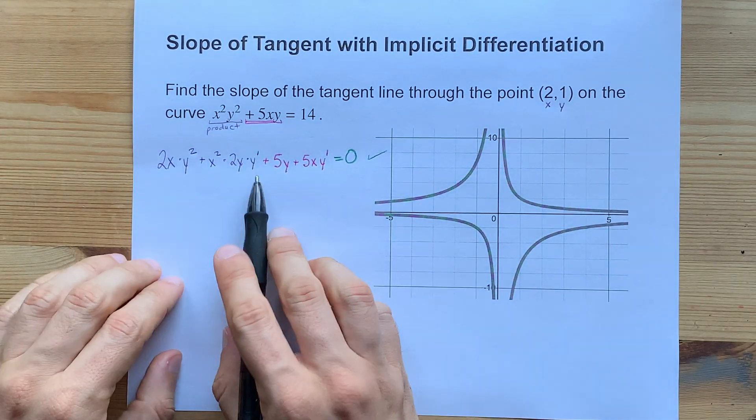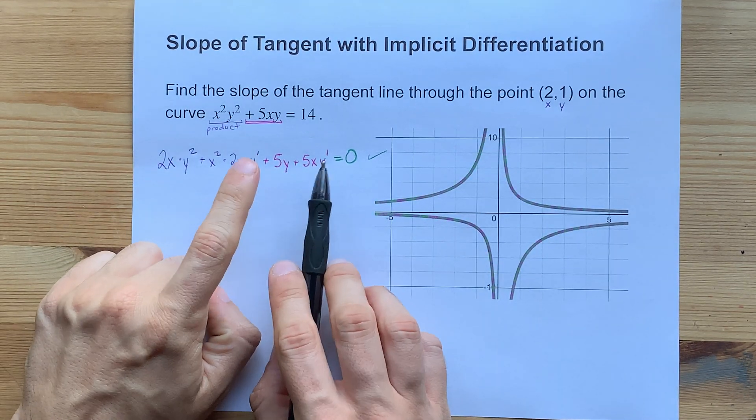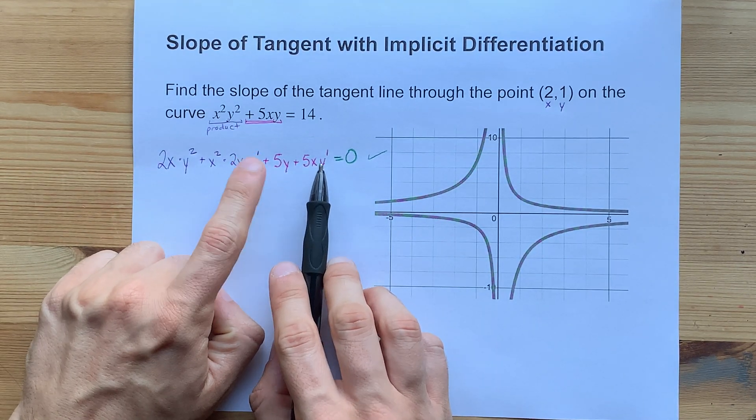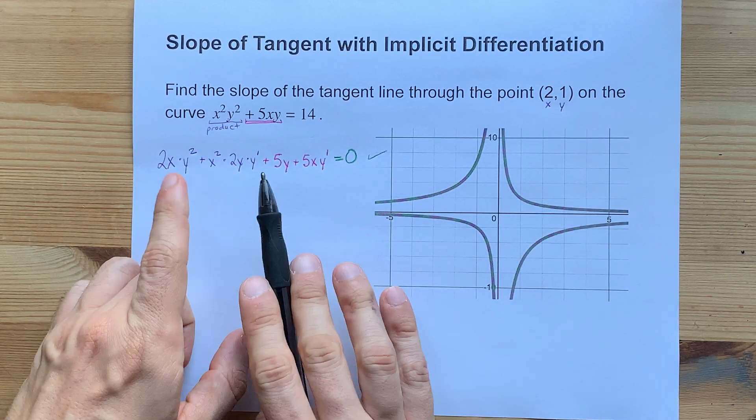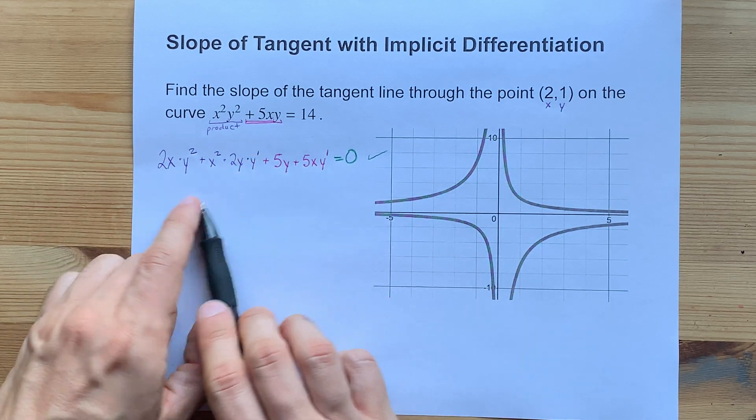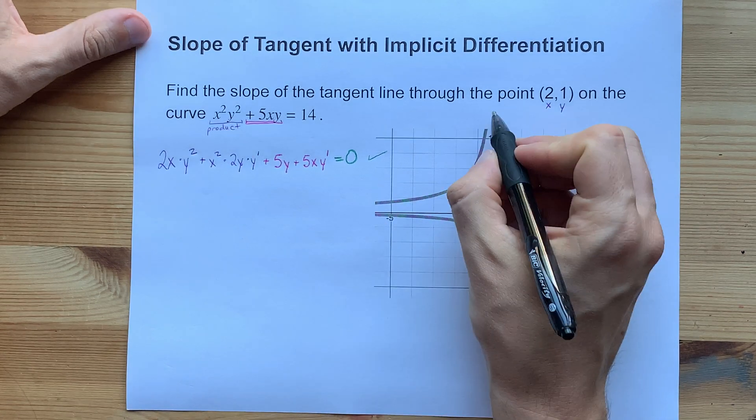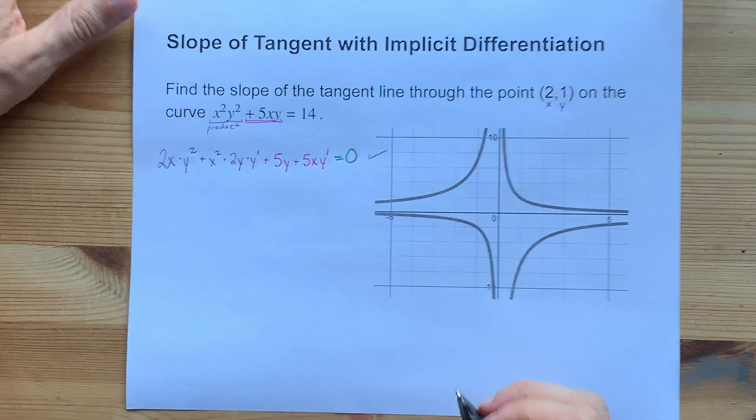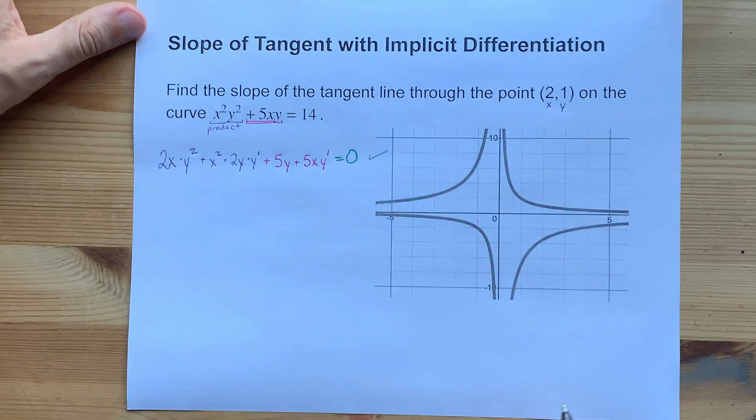Some teachers will ask you to solve for y prime in this. Your job would be to put all the terms with y prime on one side of the equal sign, all the terms without it on the other side. Then you'll factor y prime out and you'll be able to solve for it. Here though, if you're given a point (2, 1), you can replace all the x's with 2's and all the y's with 1's.